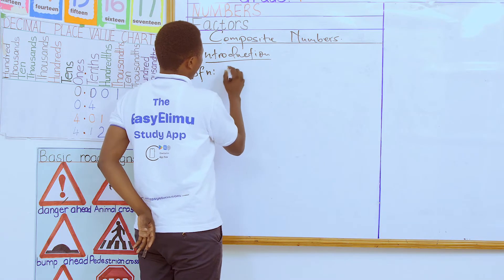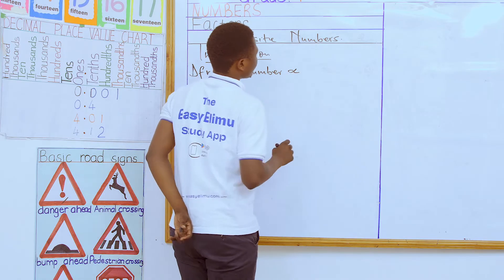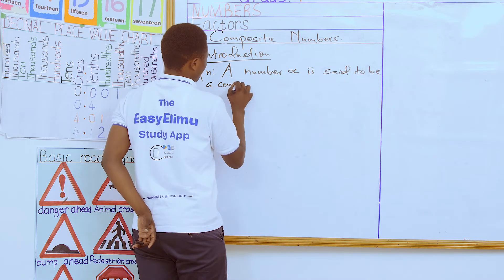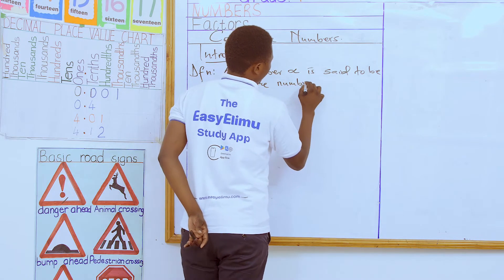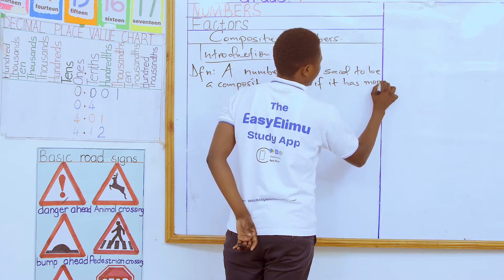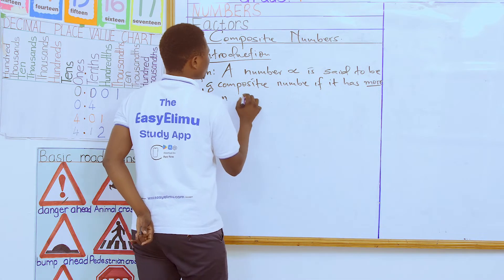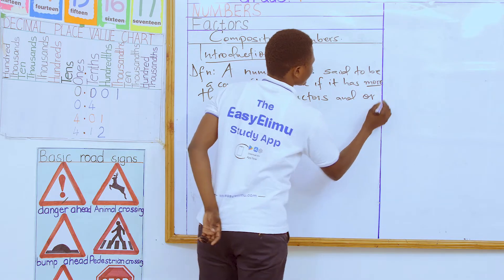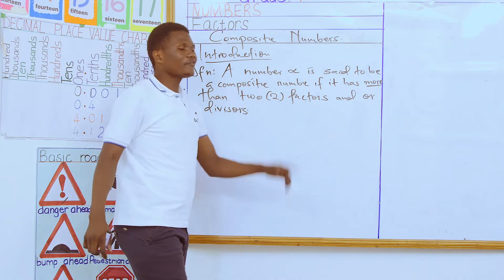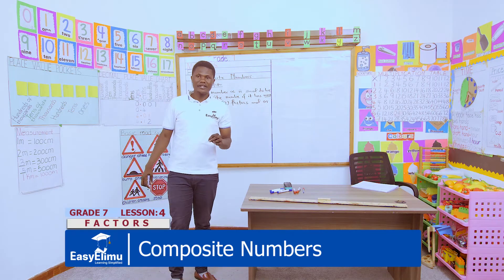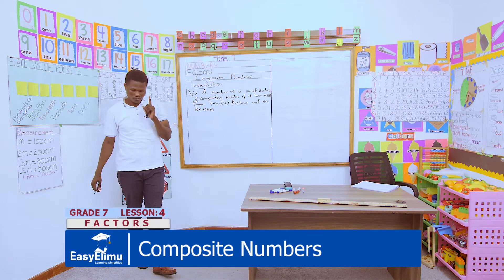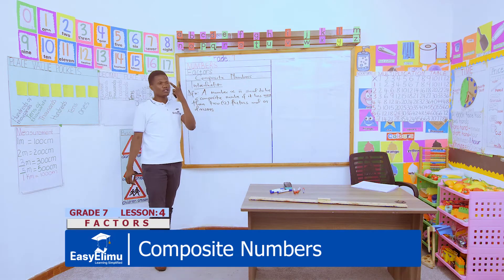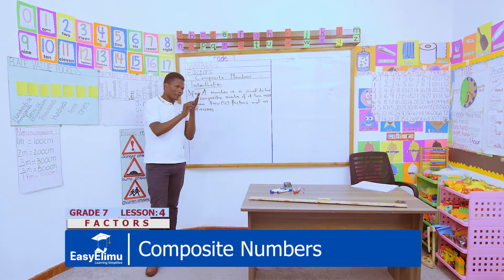A number x is said to be a composite number if it has more than two factors or divisors. Remember our definition of a prime number — what did we say is a prime number? Correct. We say that a prime number is a number with only two divisors or factors, and the two factors should be the number itself and one.